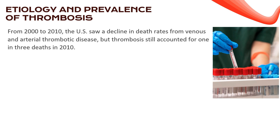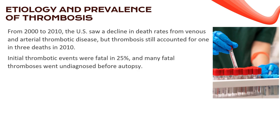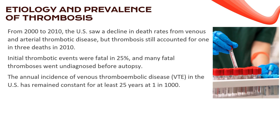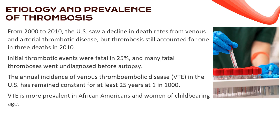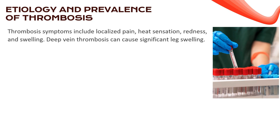From 2000 to 2010, the U.S. witnessed a decline in death rates from venous and arterial thrombotic diseases. However, thrombosis still accounted for one in three deaths in 2010. Shockingly, initial thrombotic events were fatal in 25%, and many cases went undiagnosed before autopsy. Annual incidence of VTE in the U.S. has remained constant for at least 25 years, affecting 1 in 1,000 individuals. It's more prevalent in African Americans and women of childbearing age. Deep vein thrombosis is the most common, causing symptoms like localized pain, heat sensation, redness, and swelling.